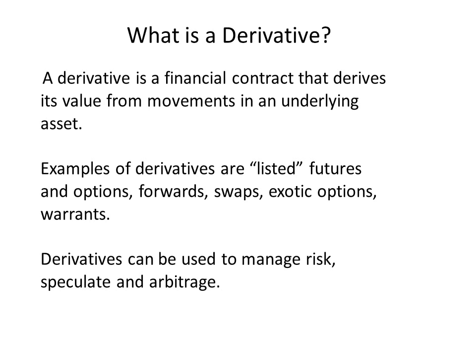Derivatives can be used to manage risk — otherwise known as hedging — but they can also be used to speculate. Speculators are attracted to derivatives because they allow the participant to get greater exposure to the price movements of underlying assets for a very small capital outlay. We'll also look at the use of derivatives for arbitrage purposes. The classic definition of arbitrage is that it involves a series of simultaneous transactions which allow the participant to lock in a risk-free profit. So later on we'll look at examples of how derivatives are used to manage risk, speculate, and arbitrage.